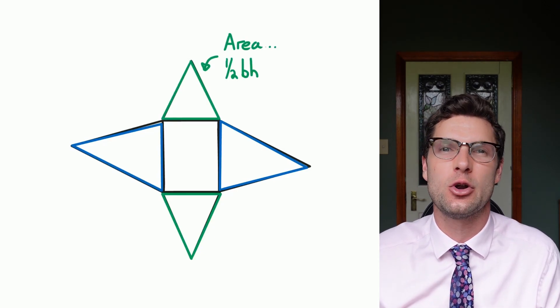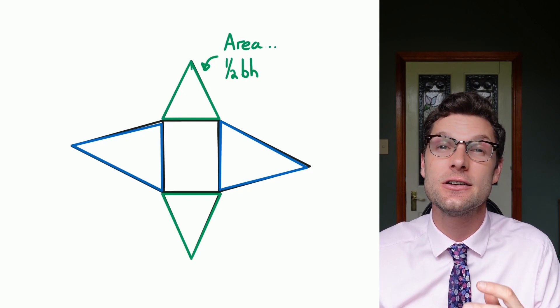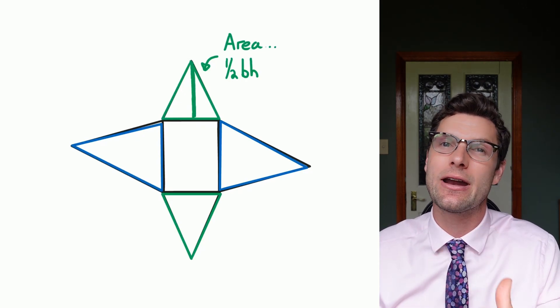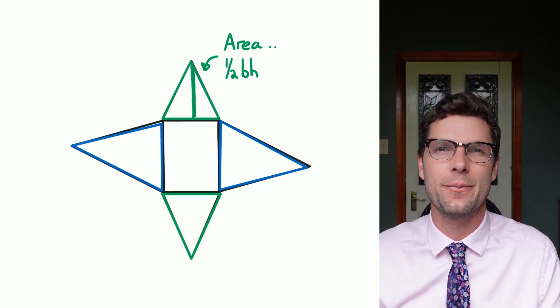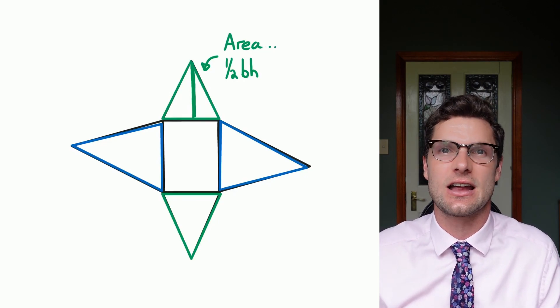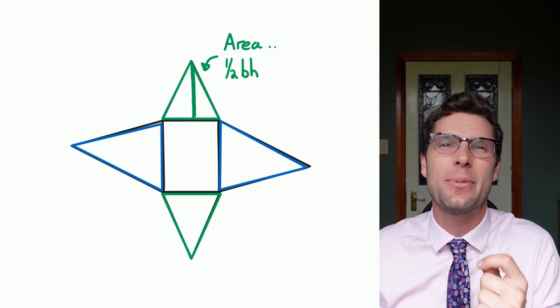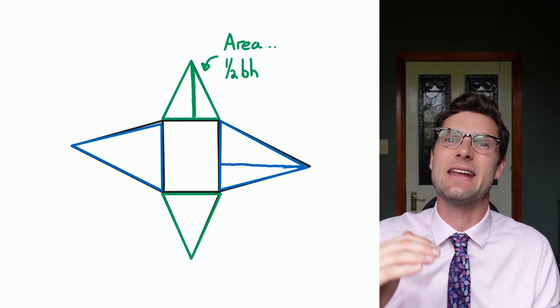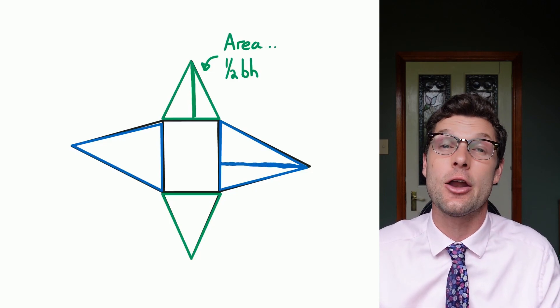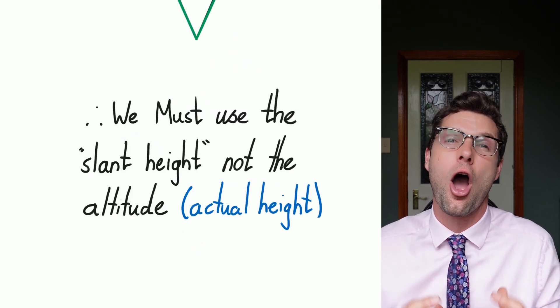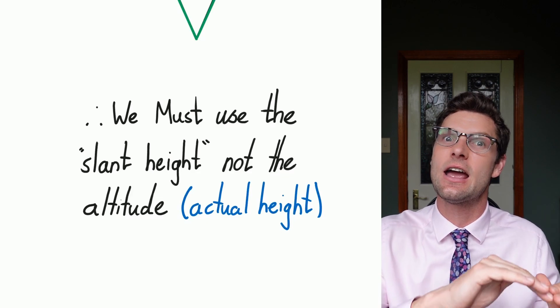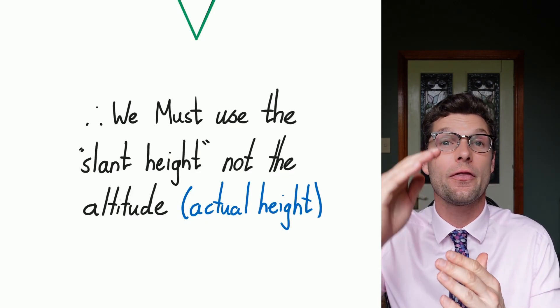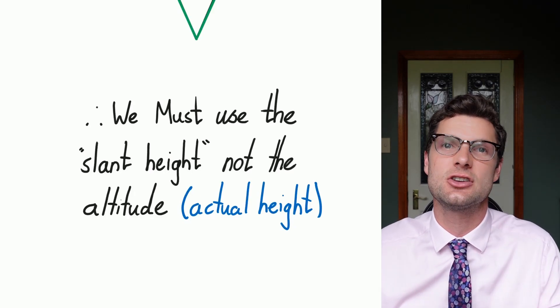But the important thing for this pyramid is I've got to use the height of the triangle that is now on my net, so that is this green line that's going straight through the middle. The area of this is obviously just a half times base times height, but the height there is not actually the height of the actual pyramid, it's what we call the slant height or the height on the side. I sometimes think about this as like it's the steps up the pyramid, that's what we've got to use, not the actual altitude of this entire shape.